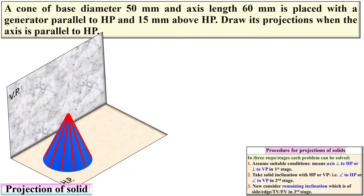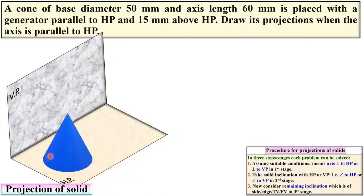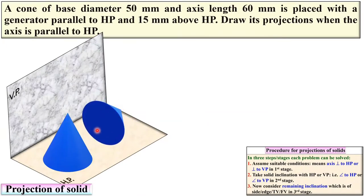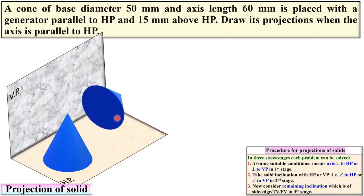There are actually infinite generators in the case of a cone. A generator is a line lying on the lateral surface joining any one point from the base to the apex point. In the front view you can see two generators. In Stage 2, we incline the axis so that this generator is parallel to HP and 15 mm above HP.